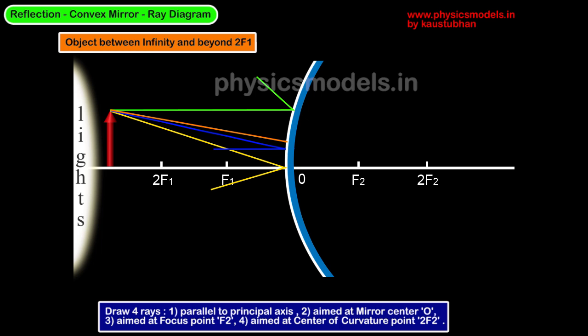The orange ray is aimed towards the center of curvature at 2F2, so it strikes the mirror at an incident angle of 90 degrees. Therefore, the angle of reflection is also 90 degrees and the orange ray comes right back to the tip of the arrow. You don't see another orange ray coming out at a different angle. The blue ray is aimed at the focal point F2 and therefore it reflects back parallel to the principal axis.